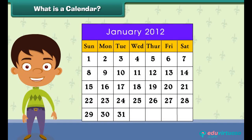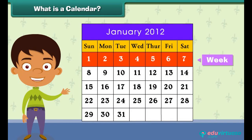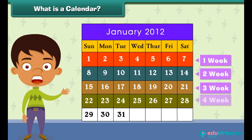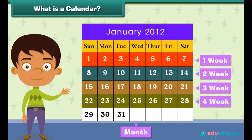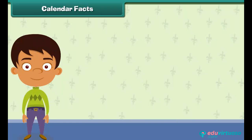Look at this calendar. You see days written in some fashion. A calendar groups days into weeks, weeks into months, and months into a year. Each day is different.